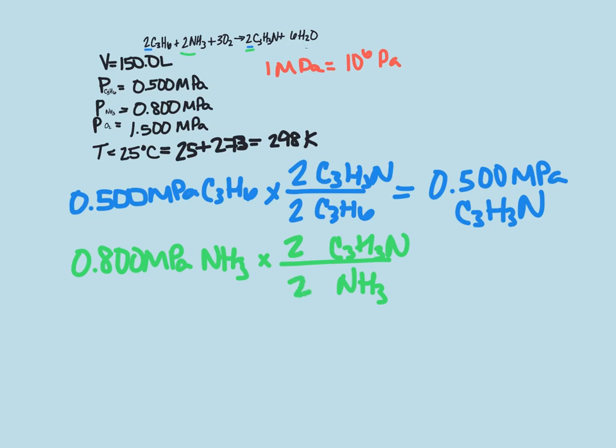So 2 to 2, which means we're going to again have 0.8 megapascals for C3H3N.